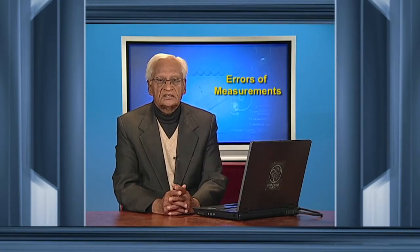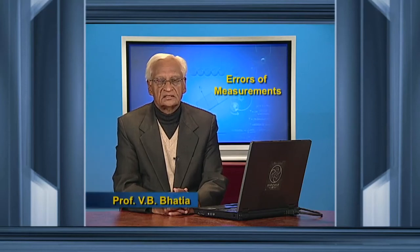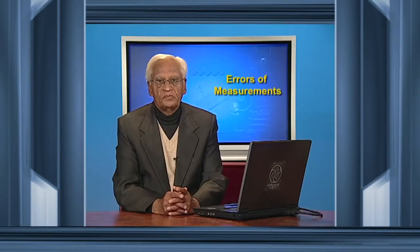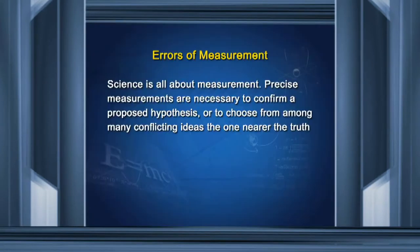We have already talked of units, dimensions and dimensional analysis. The third key concept of this chapter is measurement and the errors that creep into these measurements. Science is all about measurement. Precise measurements are necessary to confirm a proposed hypothesis or to choose from among many conflicting ideas the one that is nearer the truth.